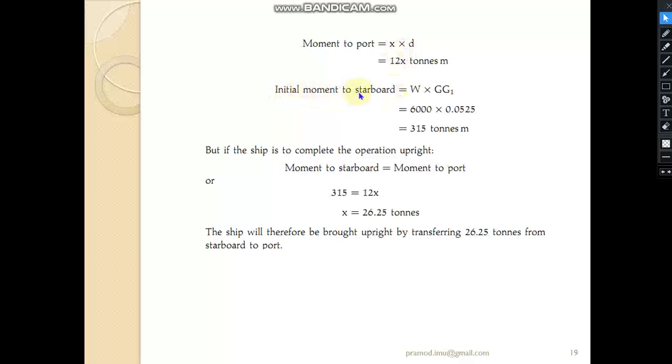The moment for this will be x into d, where d is the distance moved, which will be 12 meters—given that both tanks are 6 meters away from central line, so 6 plus 6 equals 12. The initial moment to starboard is W into gg1, which is 6000 into 0.0525, giving 315 tons-meter. If we equate these, we get x equals 26.25 tons. So the ship can be brought upright by transferring 26.25 tons from starboard to port. This can be done either in the number 2 or number 5 tank, or divided between them.